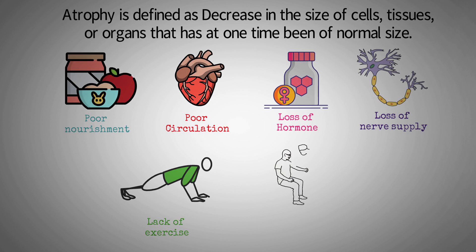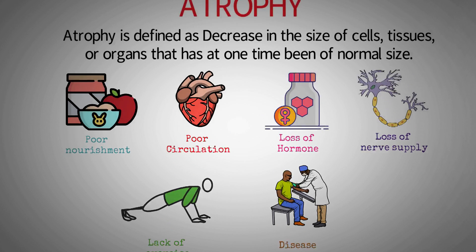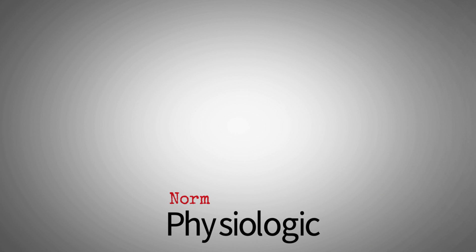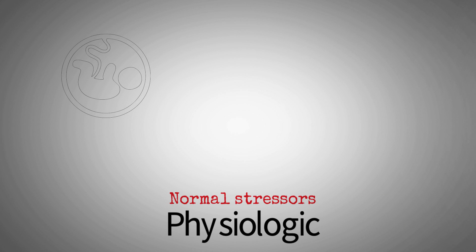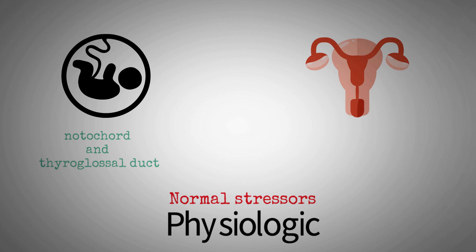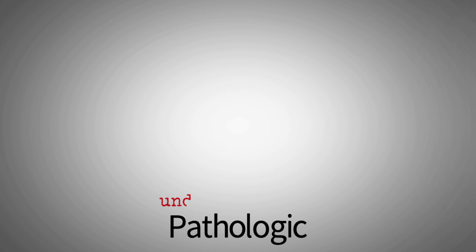Atrophy can be physiologic or pathologic. Physiologic atrophy occurs due to normal stressors and is common during early development. Some embryonic structures such as the notochord and thyroglossal duct undergo atrophy during fetal development. The uterus decreases in size shortly after parturition, and this is a form of physiologic atrophy.